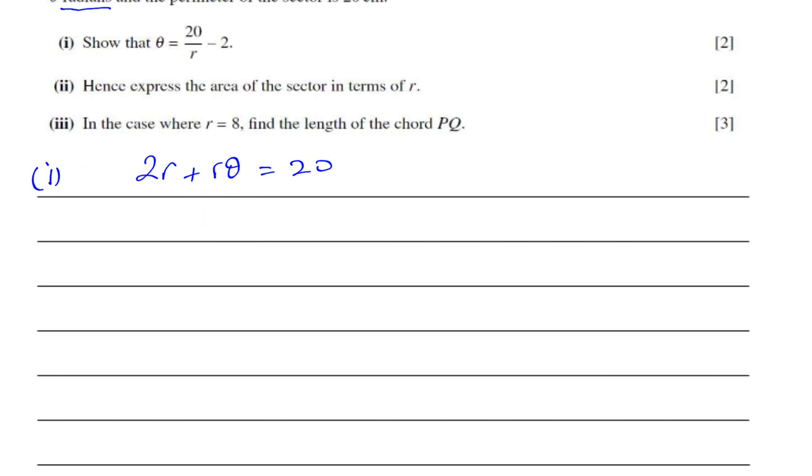First we've got to get rid of this 2R. So we're going to subtract 2R from both sides. So you have 20 take away 2R. And then we divide both sides by R to be left with theta as a subject. So when you divide by R, you're left with 20 divided by R minus 2R divided by R which is 2. And there we have it, as required.